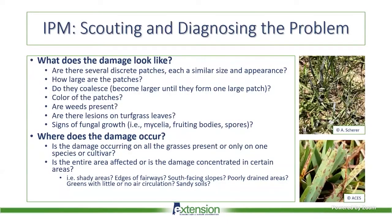There are some overall questions you can ask when scouting for turfgrass diseases. The first one is: what does the damage look like? Write it down or take pictures. Do you see several discrete patches that are similar in size and appearance? How large are the patches? Do they eventually coalesce and grow together into a larger patch? What are the colors of the patches? Are weeds present, because that can indicate stress turf? Are there lesions on the turfgrass leaves, or do you see signs of fungal growth like slime mold with spores or fruiting bodies on the leaf blades?